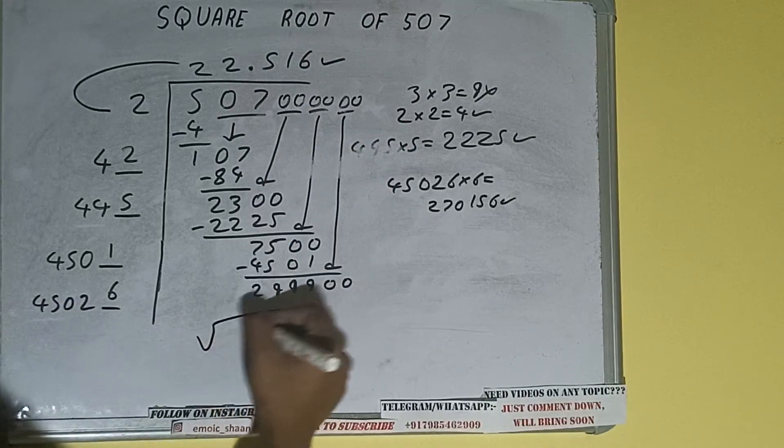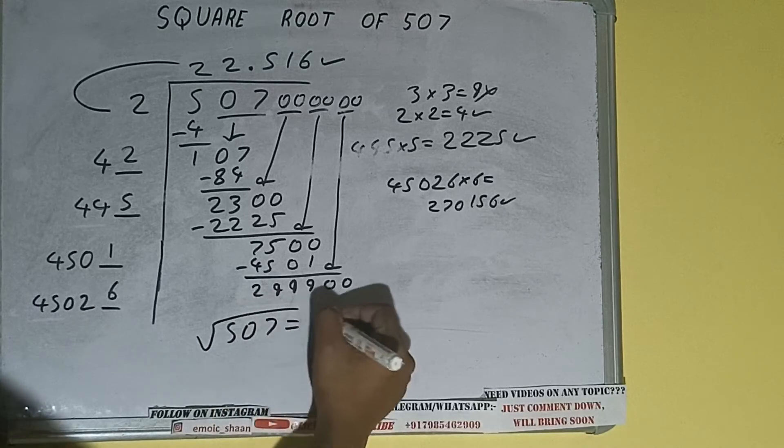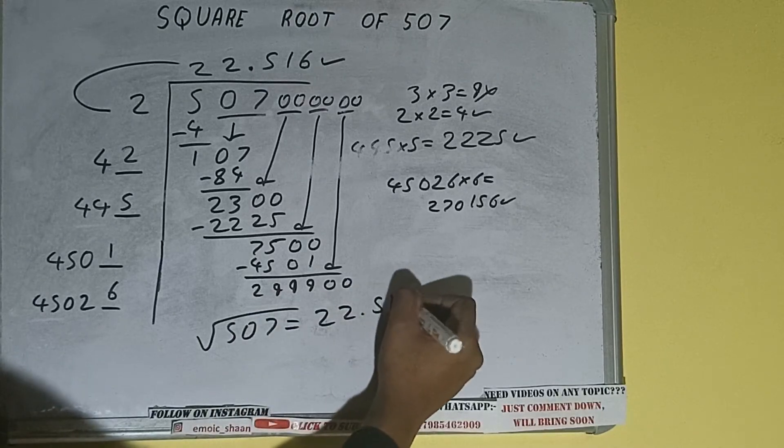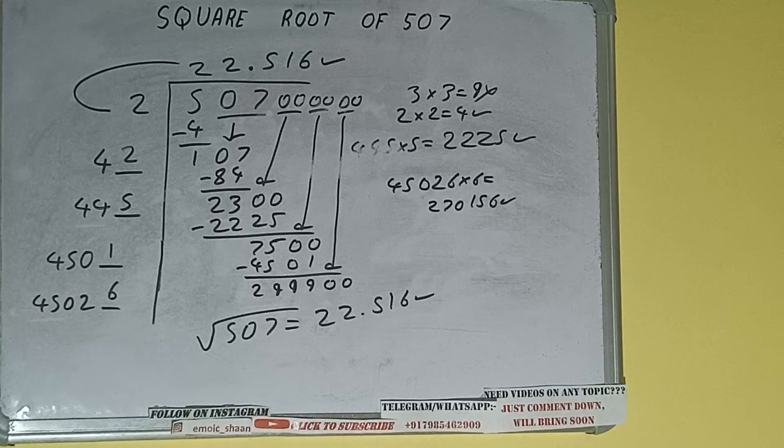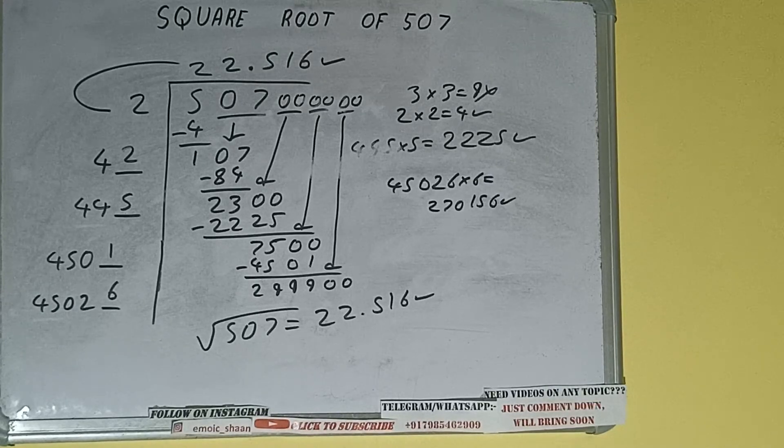So square root of 507 will be 22.516. That will be the answer. So this is all about square root of 507. If you found the video helpful, please do the like button, do consider subscribing, and thanks for watching.